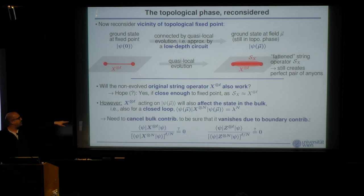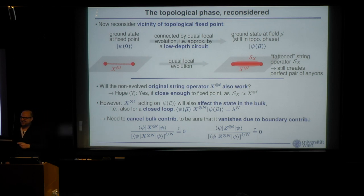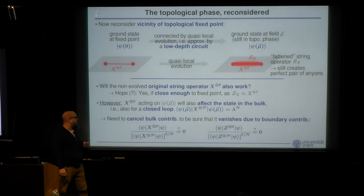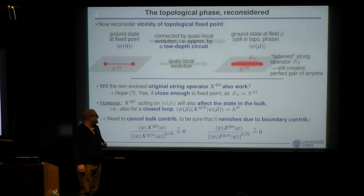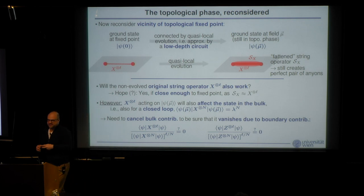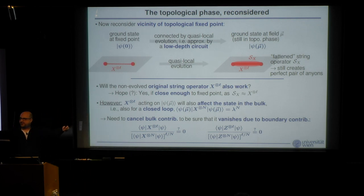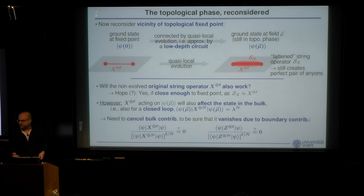The hope is that using the original string still works if we're close enough to the fixed point, so the dressed operator S_x is close to the original string. Even if this approximate equality holds, there will be a bulk penalty per unit length, so we must still take the ratio of open to closed strings to cancel that effect and see the pure topological boundary contribution.